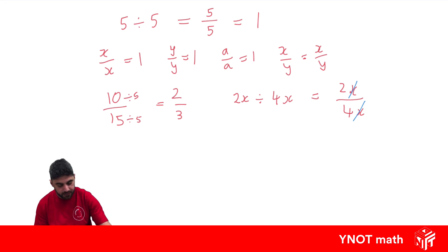So we get just 2 over 4. But then we can simplify by dividing both of these by 2 and get 1 over 2.